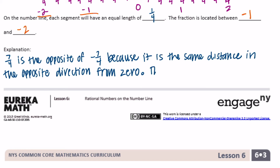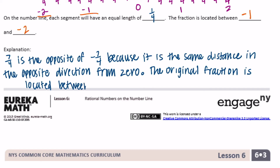The original fraction is located between negative four fourths, which equals negative one, and negative eight fourths, which equals negative two. That's how we determined the two consecutive integers.